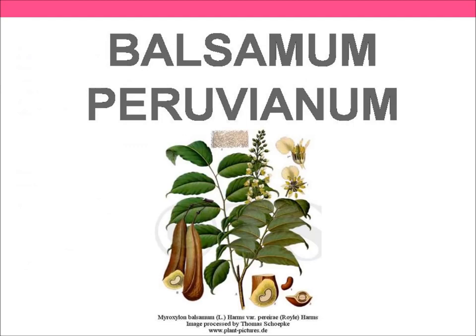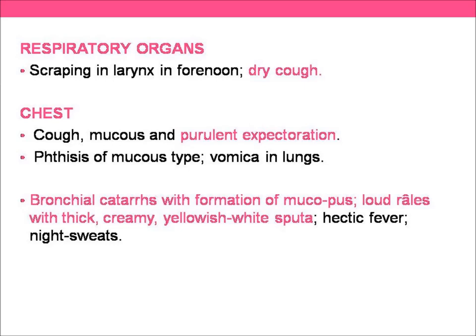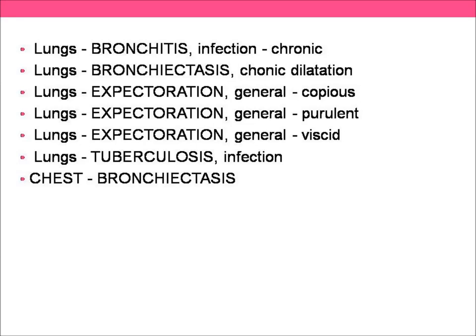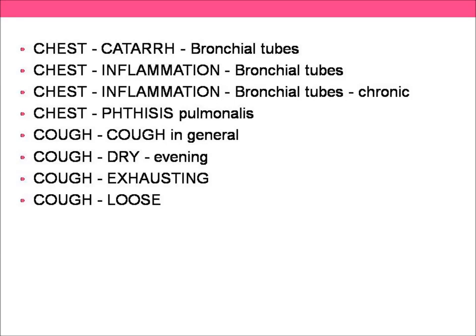Then comes Balsam Peru — a marvelous remedy I use for many conditions, not only winter cough and cold. The most important feature is a lot of catarrh in the bronchus — thick, creamy, yellowish pus, with loud rales on the stethoscope. Again, night sweats and a tubercular background. The characteristic thing is irritation in the larynx, a scraping sensation producing a lot of dry cough. If you take an x-ray, you will usually see bronchitis or bronchiectasis. The cough is usually worse in the evening.